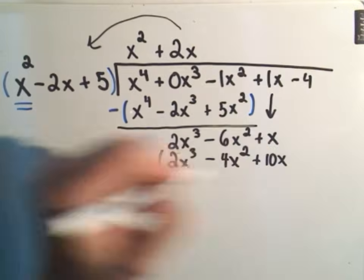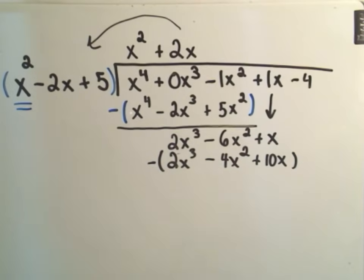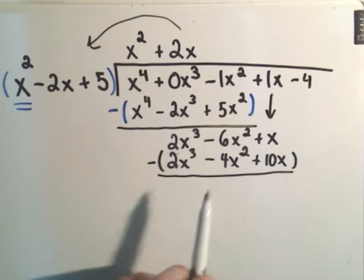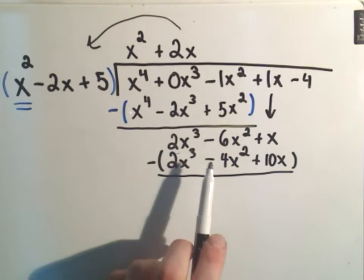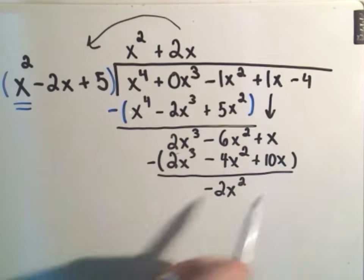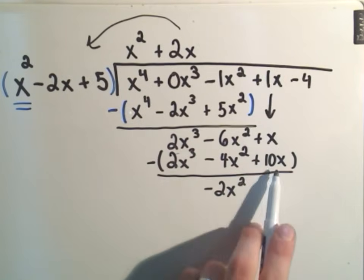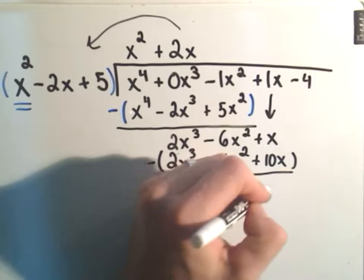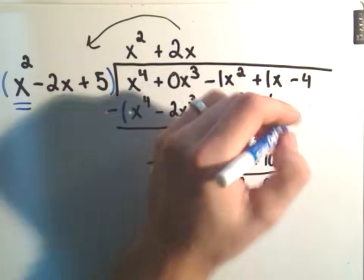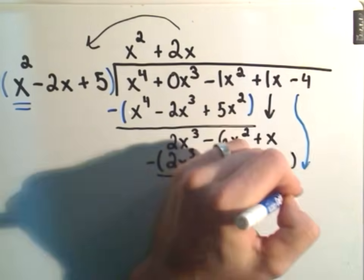I do the same thing. I just put it in parentheses and subtract it out. So the 2x cubes will cancel out. I'll get negative 6x squared plus 4x squared, so that's negative 2x squared. I'll have x minus 10x, so that's negative 9x. And then I drop my number down, my minus 4.